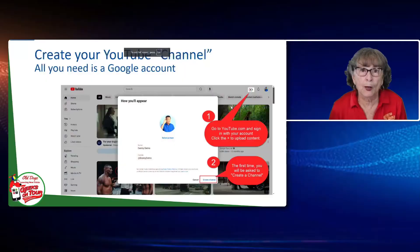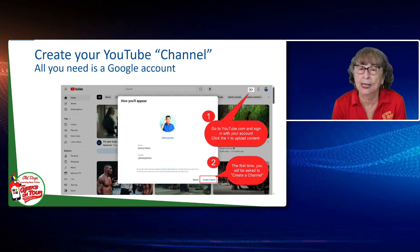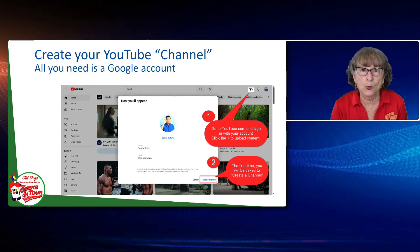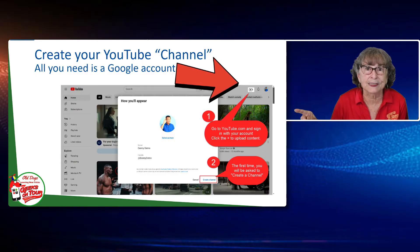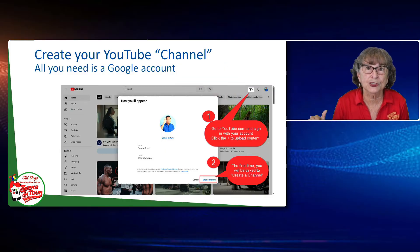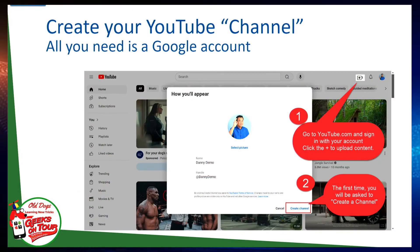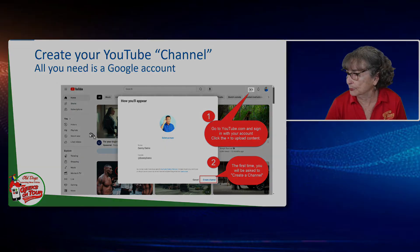So what do you need? Well, all you really need is a Google account. If you have a Gmail address, you have a Google account. There's just one more step. When you go to YouTube and you are logged in to your Google account, you will see a plus in the upper right hand corner. You click that plus in order to upload a video to your channel. The very first time you do that, it will ask you to click the button that says create channel. You create channel, you give it a name, and you're done. You now have a YouTube channel and you can start uploading videos.